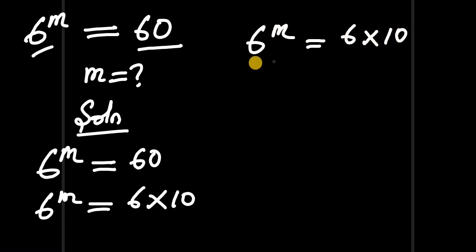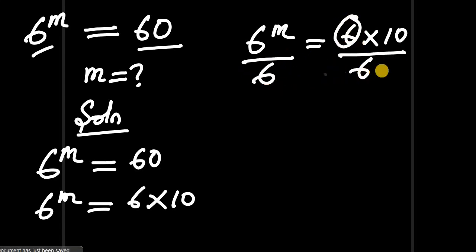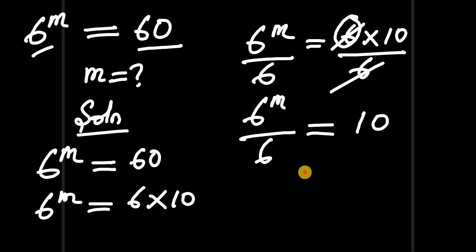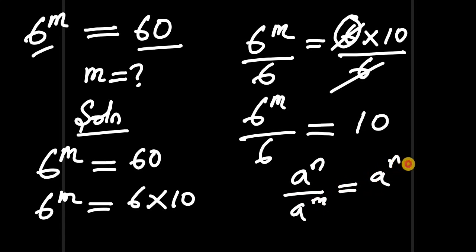Let's divide both sides of this equation by 6. The 6 on the right will cancel, so we have 6 to the power of m divided by 6 equals 10. Using the rule that a^n divided by a^m equals a^(n-m), since this 6 is to the power of 1 and the bases are the same, we get 6 to the power of m minus 1.